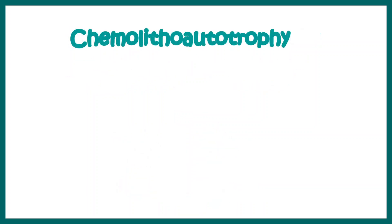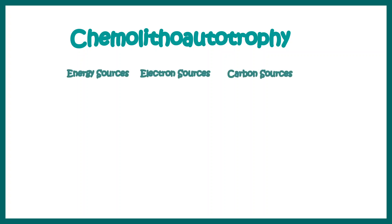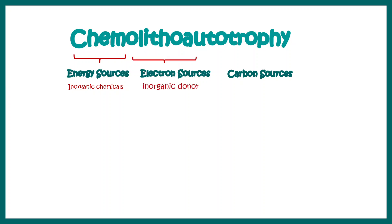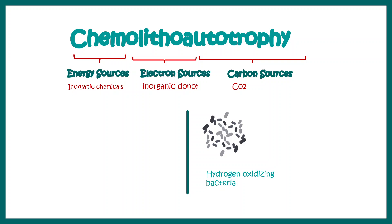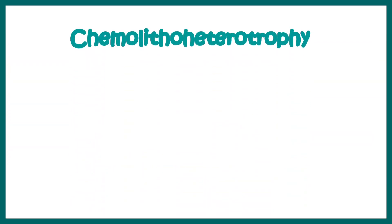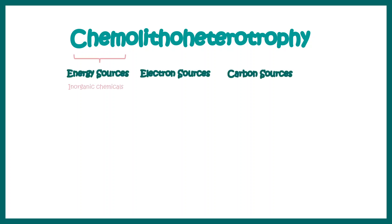The next category is chemo-litho-autotrophy. 'Chemo' means the energy is not derived from light but from inorganic chemicals. 'Litho' means the electron source is an inorganic donor, and 'autotrophy' means the carbon source is CO2. Hydrogen-oxidizing bacteria and methanogens fall under these categories.